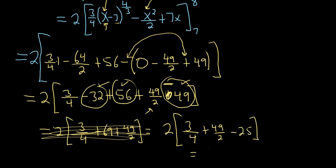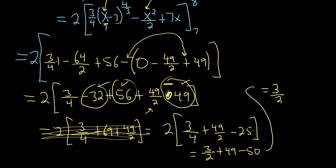So we have 3/2 plus 49 minus 50. That gives 3/2 minus 1, which is 3/2 minus 2/2, which equals 1/2. And that is the final answer.